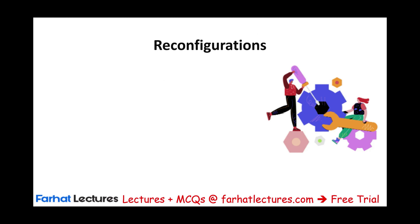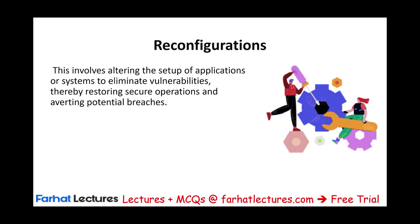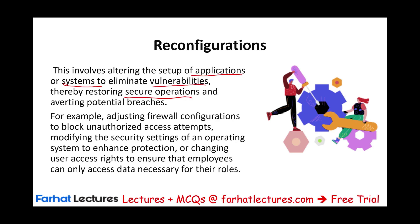The first corrective action is reconfiguration. If the problem is a system or technology, then we have to reconfigure the technology. This means altering or changing the setup of applications or systems to eliminate those vulnerabilities, thereby restoring secure operation and averting potential breaches. For example, we might have to adjust our firewall configuration to block unauthorized access, modify the security settings of the operating system, or change users' access rights to ensure that only employees who need the data for their job roles are given access.